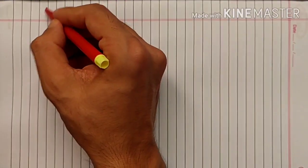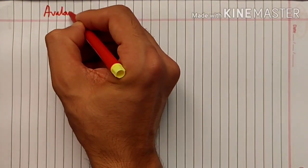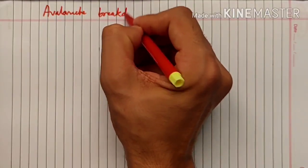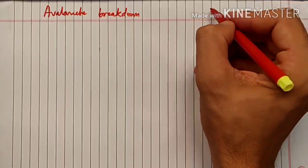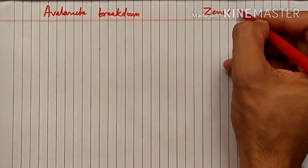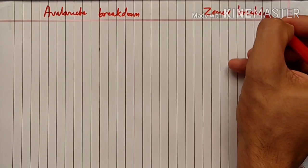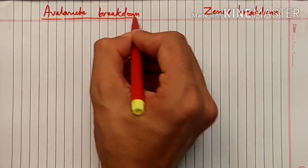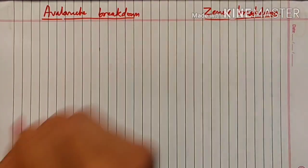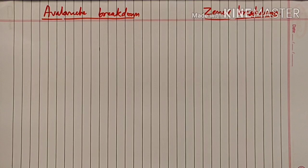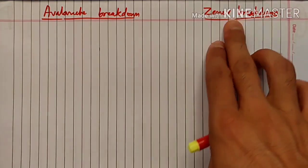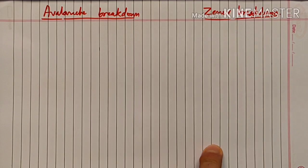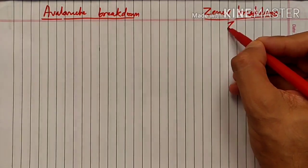अब हम बात करेंगे दो processes के बारे में which are called as breakdown processes. एक breakdown है जिसका नाम है avalanche breakdown, और दूसरा है zener breakdown. Zener breakdown पे जो diode काम करता है that is called as zener diode.